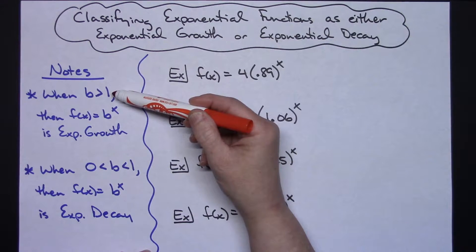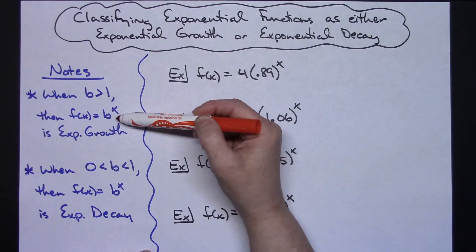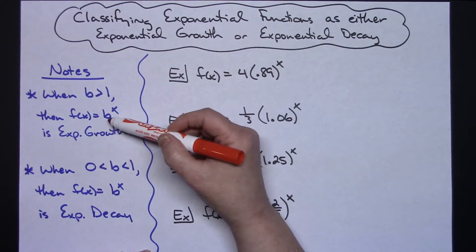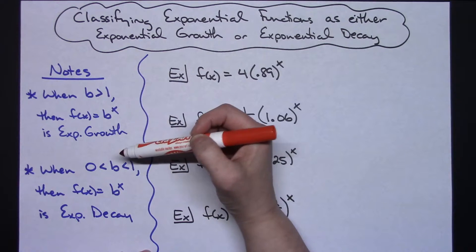In this first scenario if the base is greater than 1 in your exponential function then you've got exponential growth. So the key is looking at that base and determining if it's greater than 1.